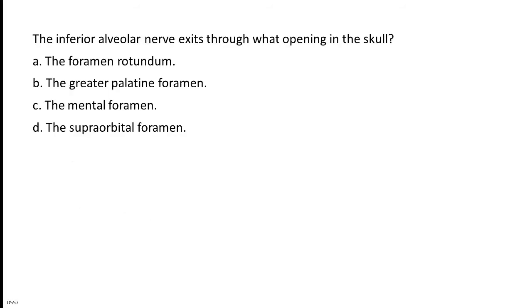The inferior alveolar nerve exits through what opening in the skull? A. The foramen rotundum. B. The greater palatine foramen. C. The mental foramen. D. The supraorbital foramen.